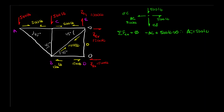Now let's look at CB. I see something wrong with CB and I could fix it right now, but I'm not going to — I want to show what happens when you make a mistake on force direction. The summation of forces in the Y direction has to equal zero. My current diagram shows minus 500 pounds coming down from on top, plus a minus CB going down — the way I've drawn it — has to equal zero.